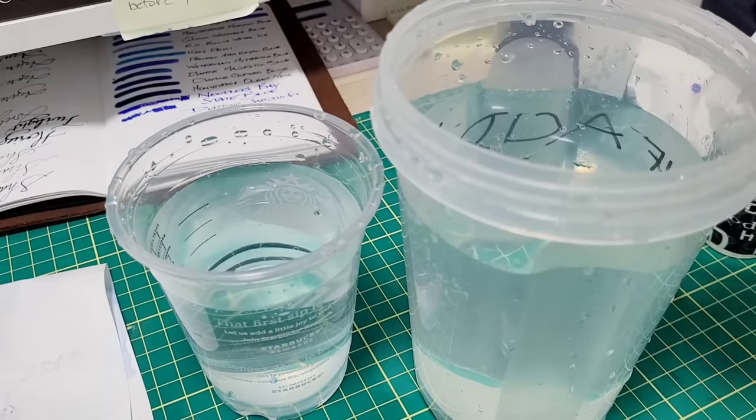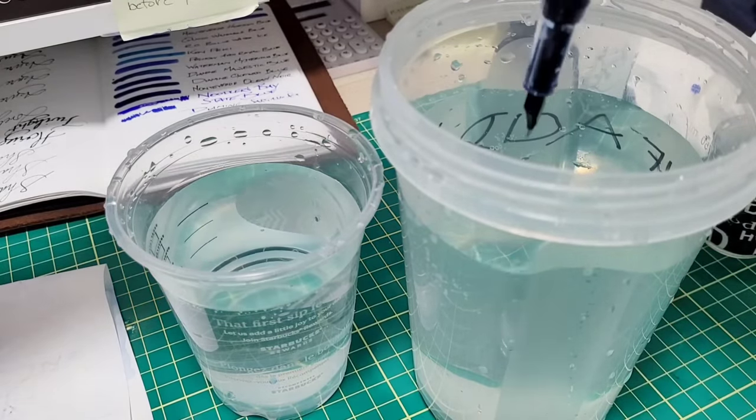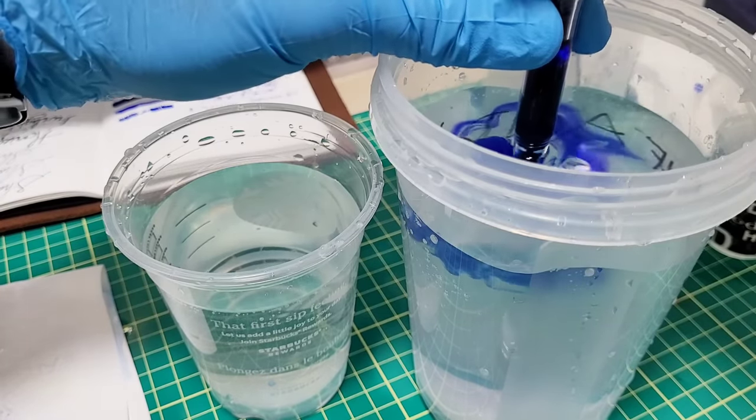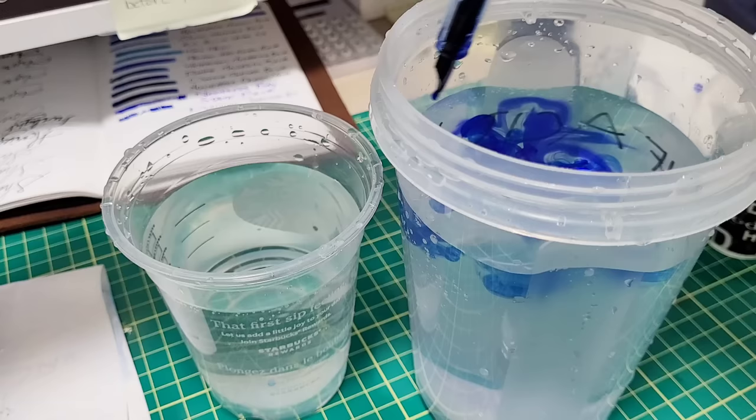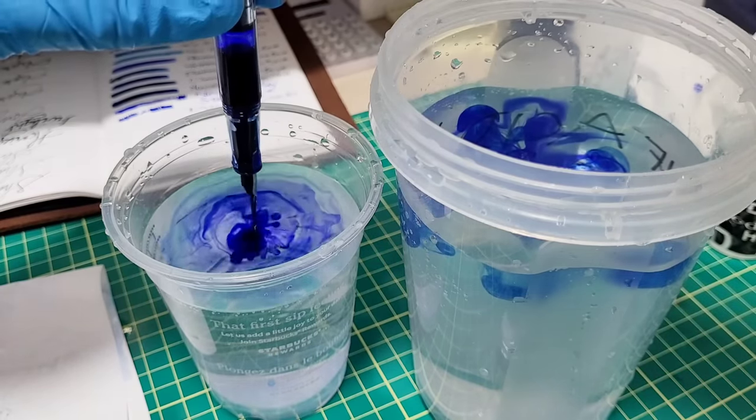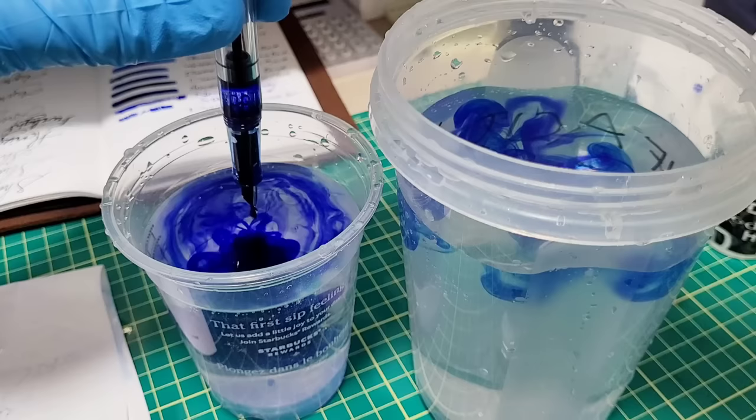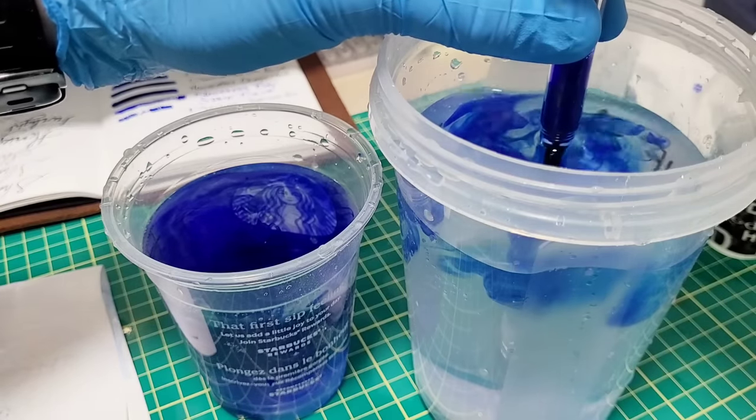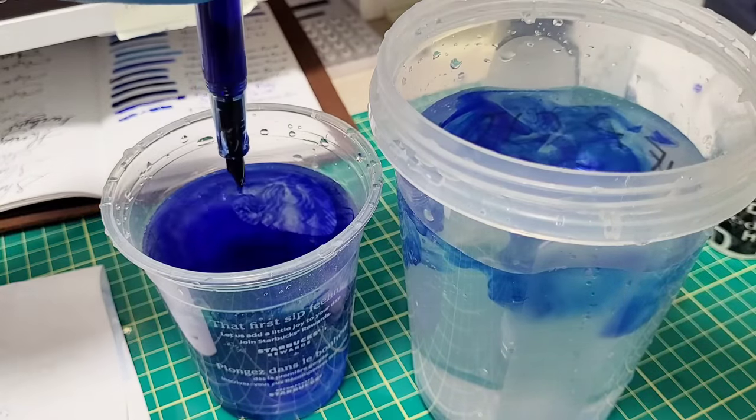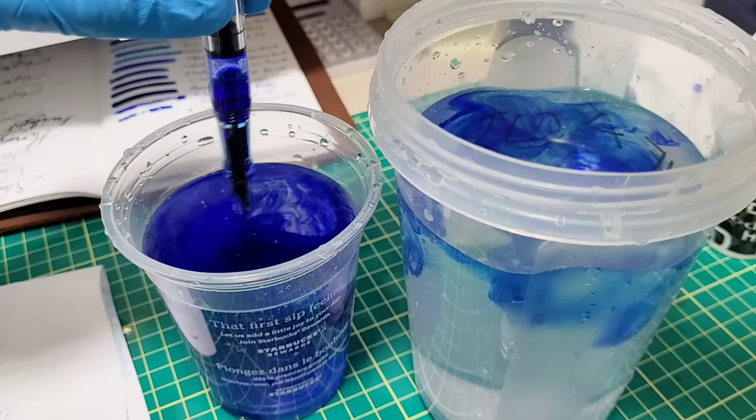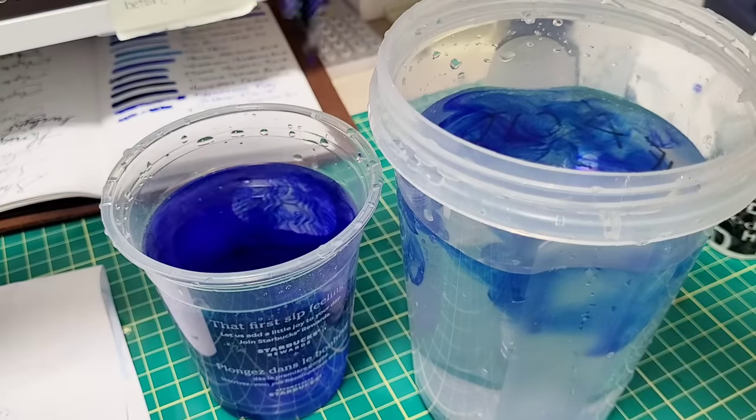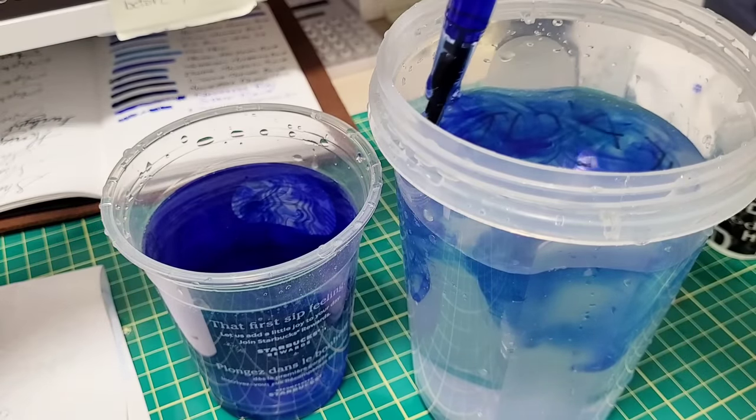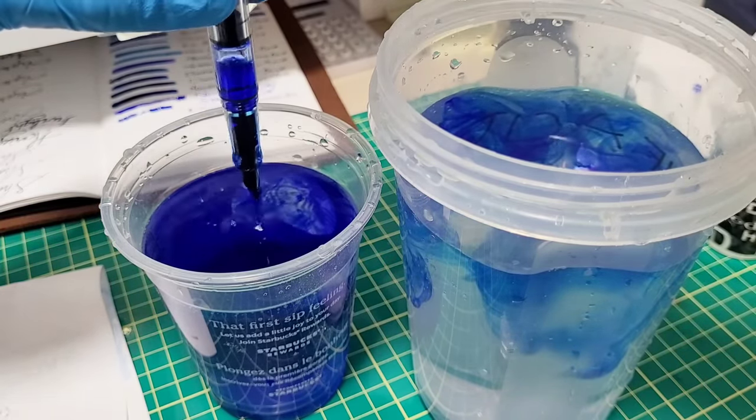Now I normally clean out pens in the sink but the sink we have here downstairs where I do my work is a white sink and I don't want my wife to absolutely murder me. So I'm going to do it this method and we'll see how clean we get this. I'll try the pen wash as well. Seeing how it handled the paper we shall see. But I mean it's flushing out so far. Let's just keep at this and see where we get to.